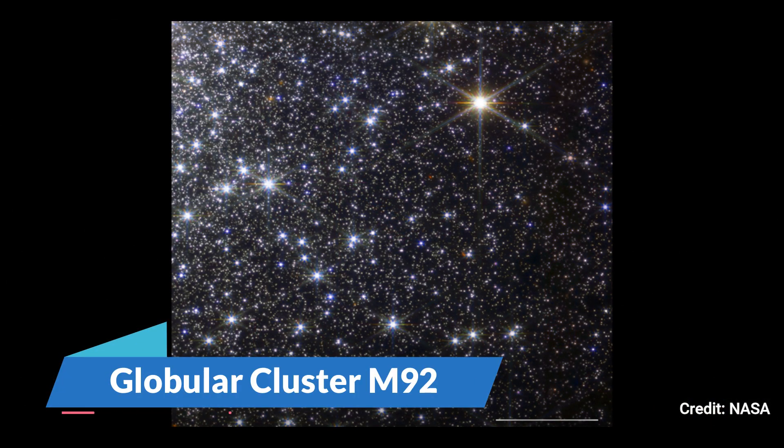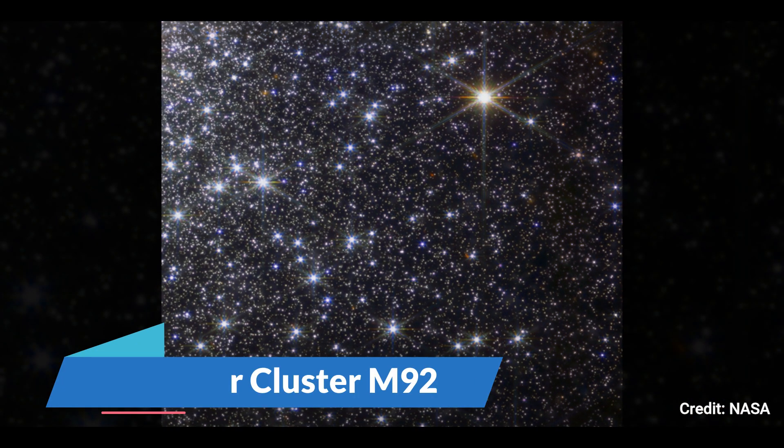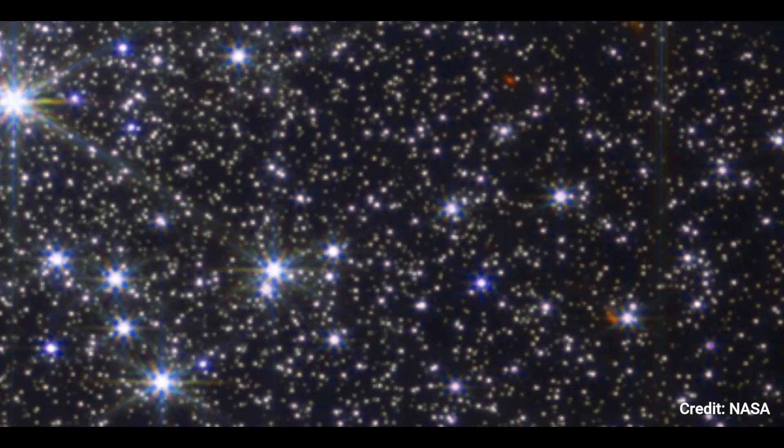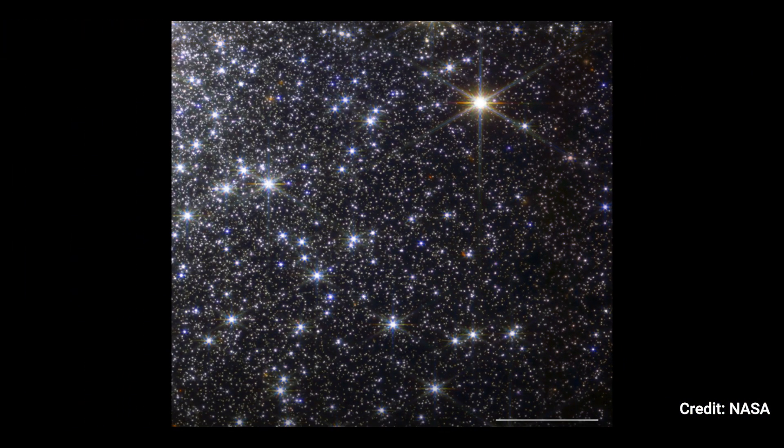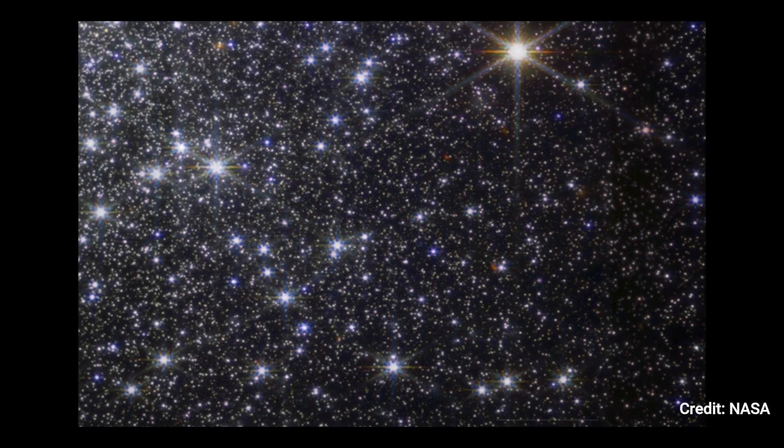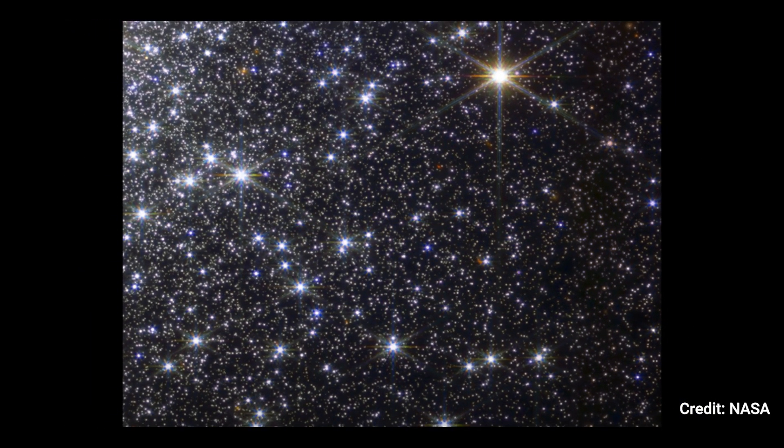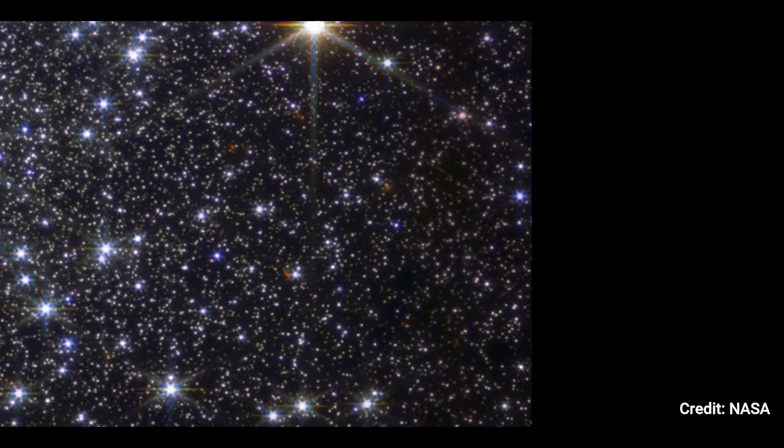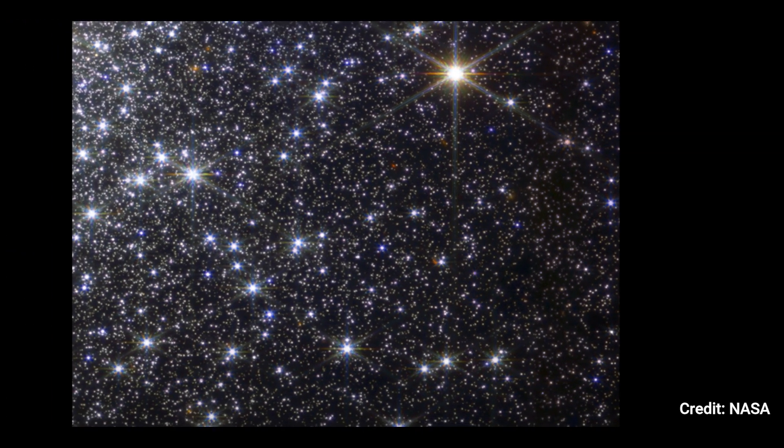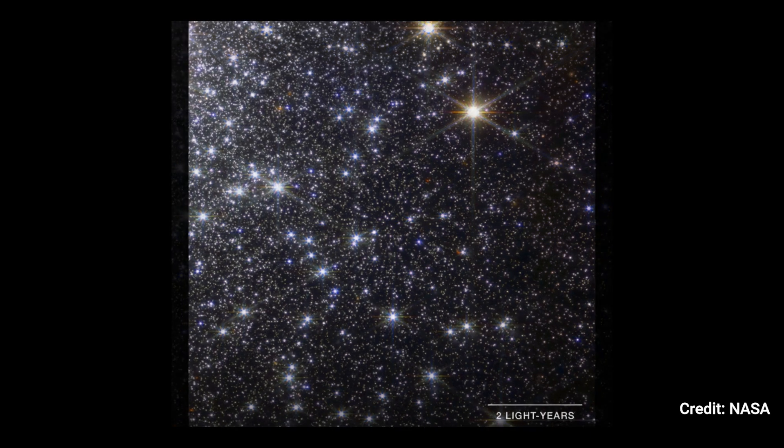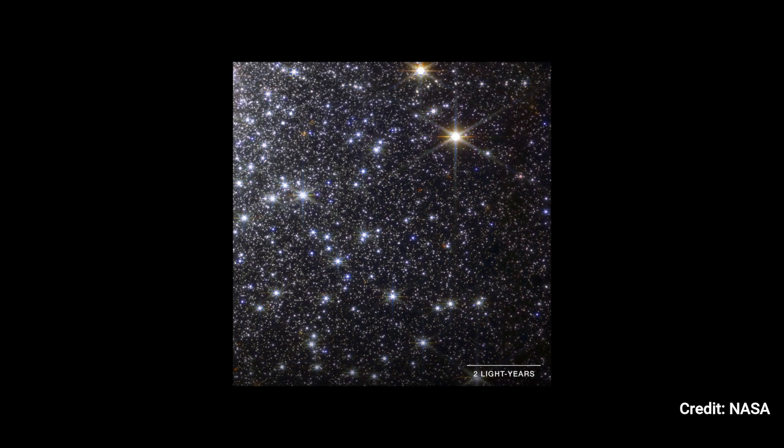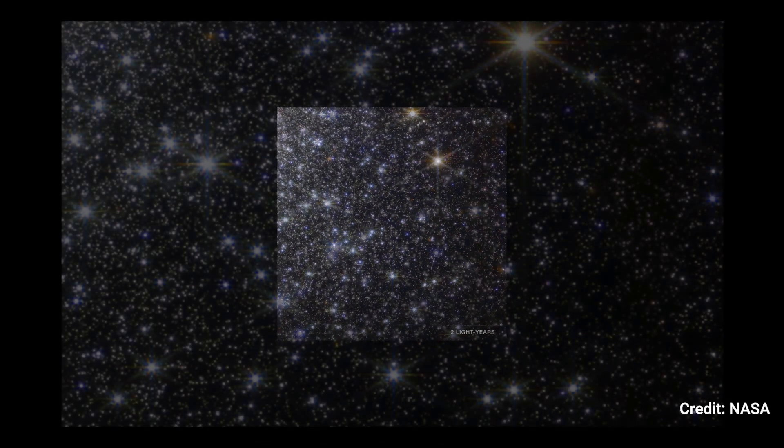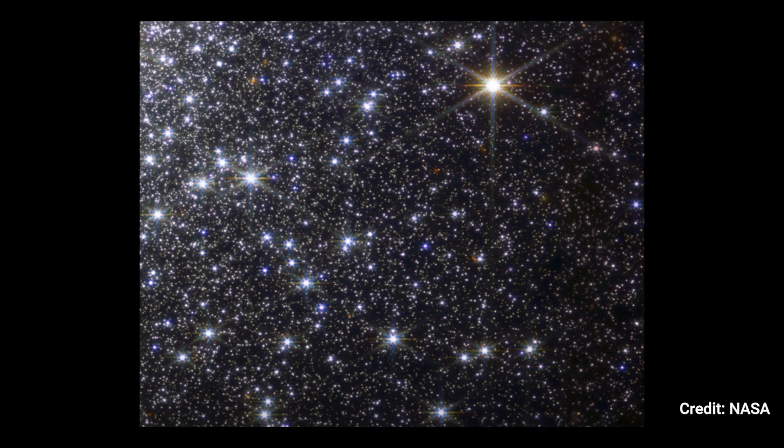Number 2: Globular Cluster M92. Webb's near-cam sensor obtained this detail of the globular cluster Messier 92. This field of vision encompasses the lower left quarter of the image's right half. Globular clusters are dense clumps of closely packed stars that formed all at once. M92 contains approximately 300,000 stars packed into a ball roughly 100 light-years across.